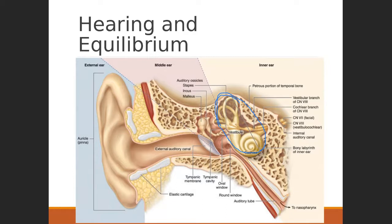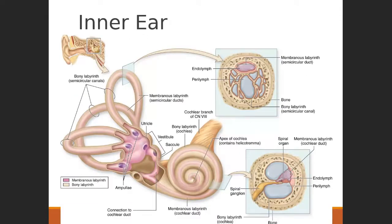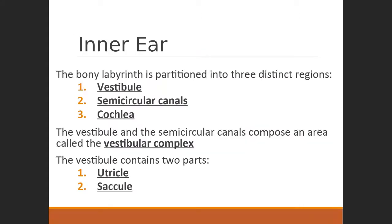Hearing and equilibrium are unrelated other than sharing a cranial nerve and being physically close to one another. Looking at equilibrium and the inner ear structure, we can draw a line: everything on one side has to do with balance and equilibrium; the spiral organ on the other side is for hearing. We can divide the balance half further into the vestibule and semicircular canals, and the vestibule can be divided into the utricle and saccule.